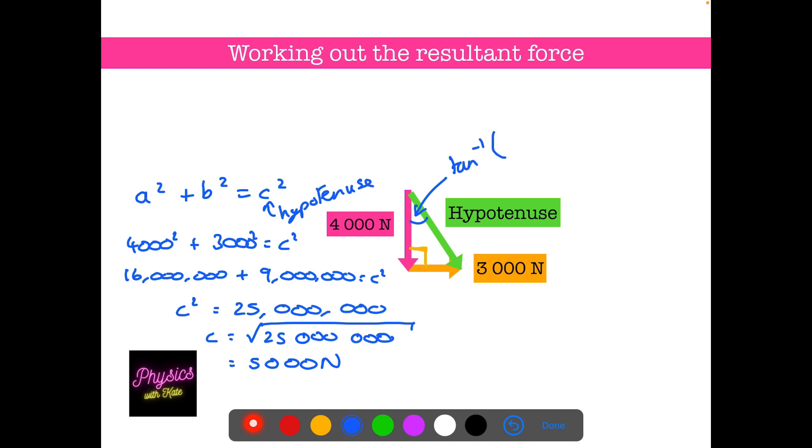And tan is TOA. So it's opposite side, which is the 3000 newtons over the adjacent side, which is the 4000 newtons. So if you pop that into your calculator, make sure you press shift on your calculator before pressing tan so you get the inverse tan. And that is going to give you 37 degrees when you round it.